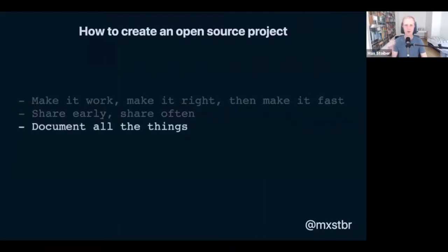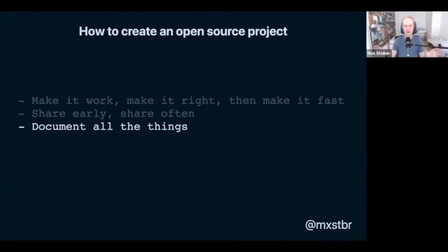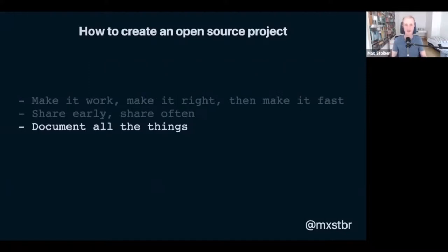Thirdly, and really importantly: document all the things. For the first Styled Components release, we spent maybe 20% of our time actually creating the library and 80% documenting every single thing you could do with it, how it worked, why it worked, and all of that. That was really vital to its success. I sometimes see this trope about open source: 'if you want to figure out how this works, just read the source code.' But nobody's going to read source code to figure out the API. If I want to use something, just tell me how to use it, tell me what it can do, tell me all the edge cases. Document all the things.